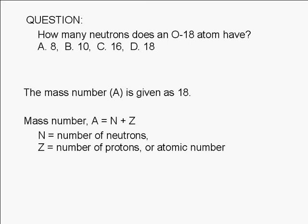We're asked for the number of neutrons, so we rearrange the equation to solve for N. N equals A minus Z.